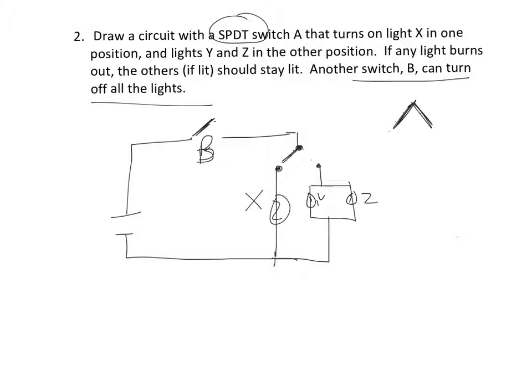And that's it. If switch A is to the left and switch B is down, it'll light up bulb X. If B is down and A is to the right, it'll light up Y and Z. And that's how you draw circuit diagrams.